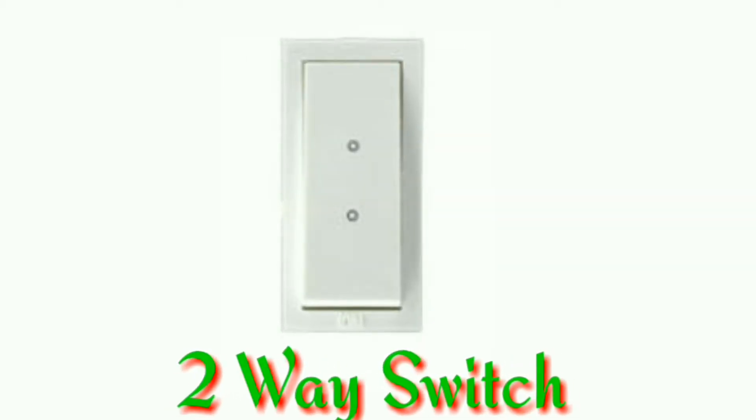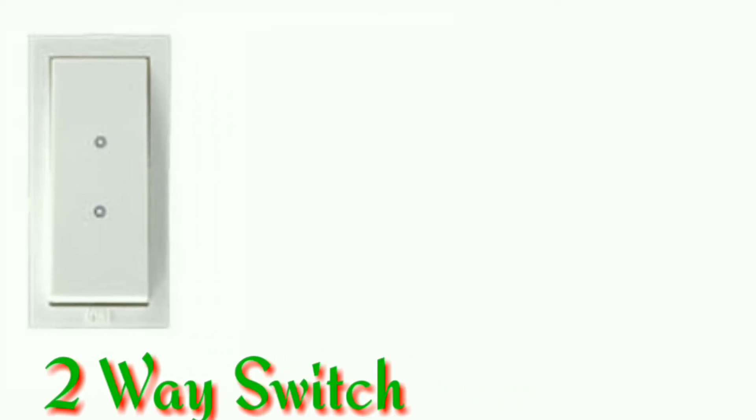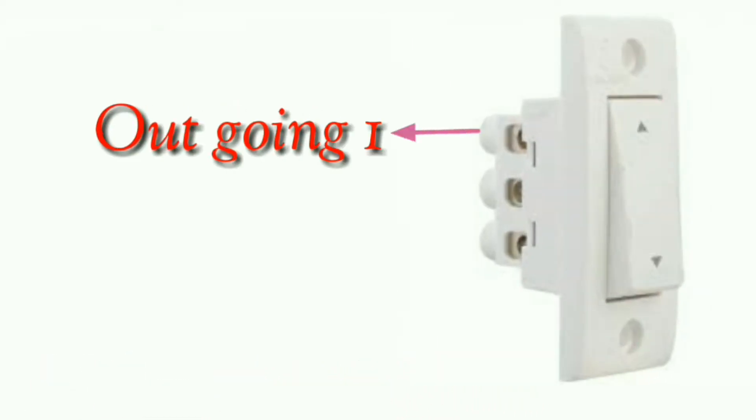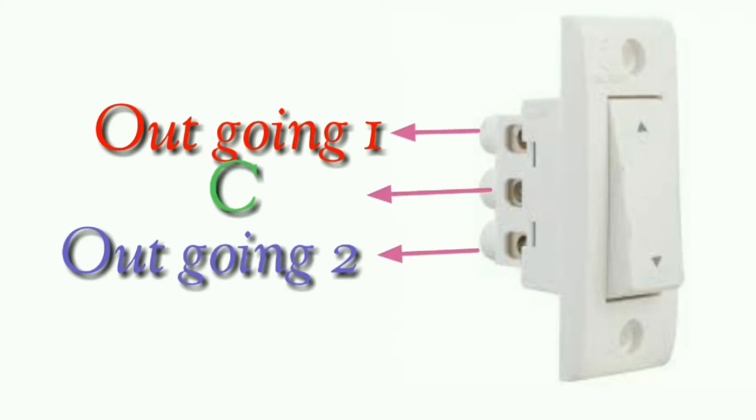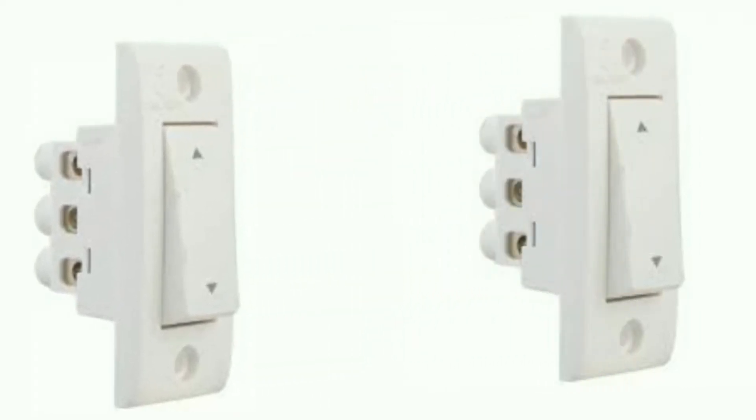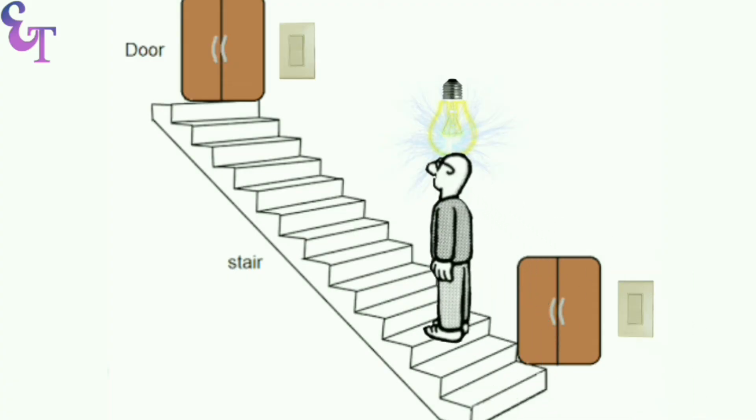Friends, in staircase wiring we have to use two two-way switches. In a two-way switch there are three terminals, in which one is outgoing terminal one, outgoing terminal two, and common terminal. In this wiring we have to use two two-way switches. Let's start learning how to do wiring for staircase.